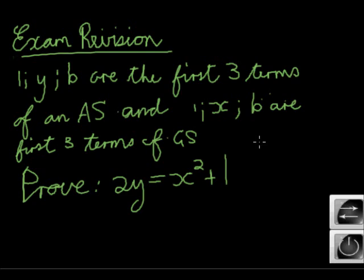Very few people got this one right. 1, y, and b are the first three terms of an arithmetic sequence, and 1, x, and b are the first three terms of a geometric sequence. Prove that this is true.